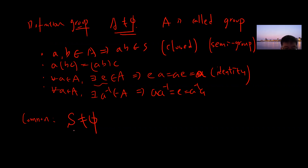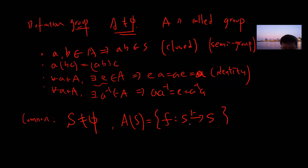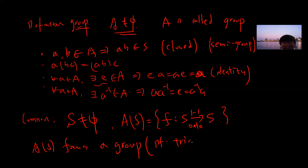One very common example: given a non-empty set S, you can define A(S) as all functions from S to S that are both injective and surjective — i.e., bijections. This is a function group, and the proof is trivial. It's obviously closed, functions always satisfy associativity, the identity is just the identity function, and inverses exist because each function is bijective.